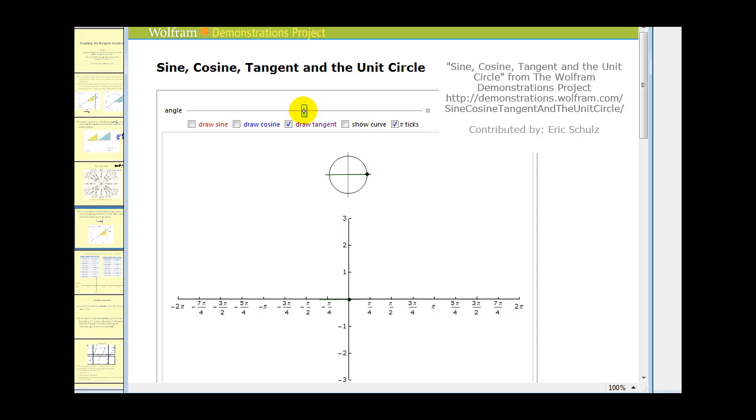As we approach pi over two radians or ninety degrees, notice that the x coordinate is approaching zero while the y coordinate is approaching one. The values get larger and larger, and then at pi over two it's actually undefined because we would have the point zero, one or one divided by zero, which we know is undefined. This produces a vertical asymptote because tangent theta is undefined when x equals zero.